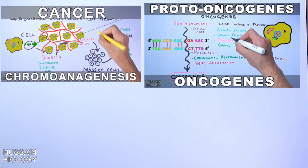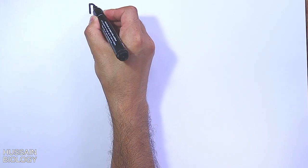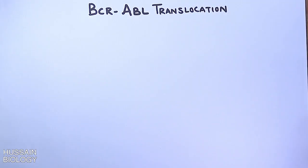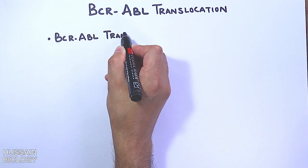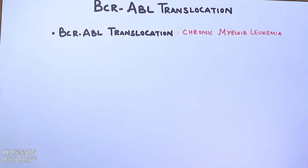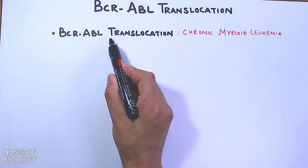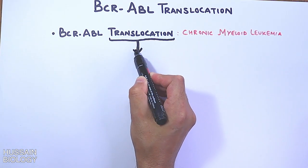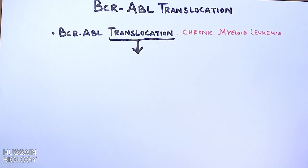In this series of videos we have been discussing cancer proto-oncogenes and oncogenes. In this video we'll be discussing the BCR-ABL translocation, one of the important translocations between chromosomes that generates an oncogene. From this BCR-ABL translocation we get chronic myeloid leukemia (CML), as the translocation gives rise to an oncogene which in turn leads to CML.